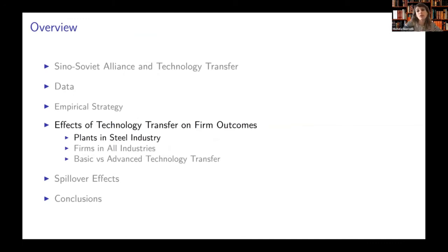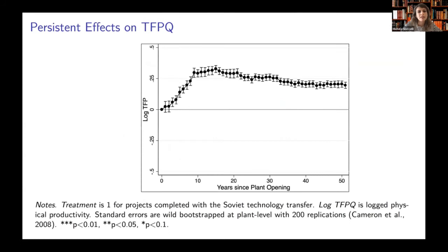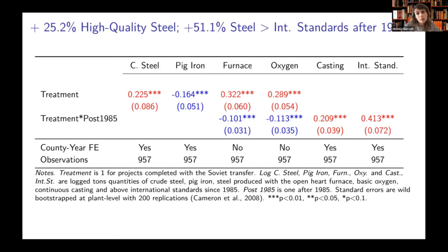Turning to the first set of results: we find that receiving Soviet technology transfer had a positive effect on treated firms. They increased production of steel by 24% and were 33% more productive. Looking at the persistence of the effect, we can see that the effect on productivity started being significant three years after the start of the program and remains large and significant until the end of our sample — so 50 years after these projects actually started. We can also look at the composition of the steel produced and find an increase in the production of high-quality steel — that is, clear steel — and a decrease in the production of pig iron.